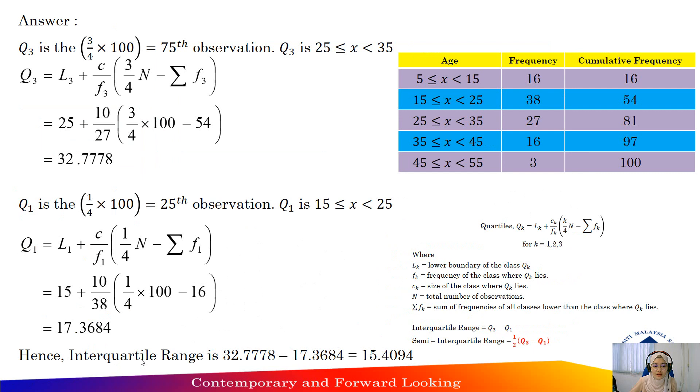Next, you need to find the interquartile range. To find the interquartile range, you need to find the third quartile and the first quartile first. So Q3, three-quarters times 100 total frequency. So you will get 75th observation.